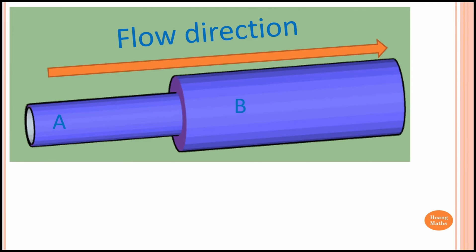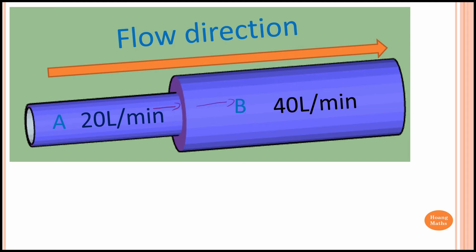Here we have a pipe with two parts. Part A has a maximum flowing capacity of 20 liters per minute, and part B has a maximum flowing capacity of 40 liters per minute. Since there are only 20 liters per minute flowing into B, we have only 20 liters per minute flowing inside B as well. The maximum flowing capacity is the smallest value, which is 20 liters per minute — so the outflow for this pipe is 20 liters per minute.